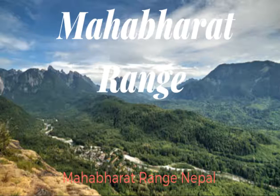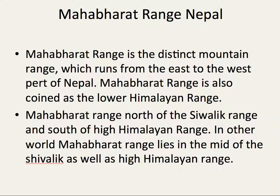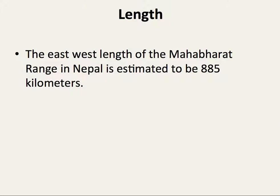Mahabharath Range, Nepal. Mahabharath Range is one of the distinct mountain ranges which runs from the east to west part of Nepal. It is coined as the Lower Himalayan Range. Mahabharath Range lies to the north of Shivalik Range and south of the High Himalayan Range. In other words, Mahabharath Range lies in the mid of Shivalik as well as the High Himalayan Range.